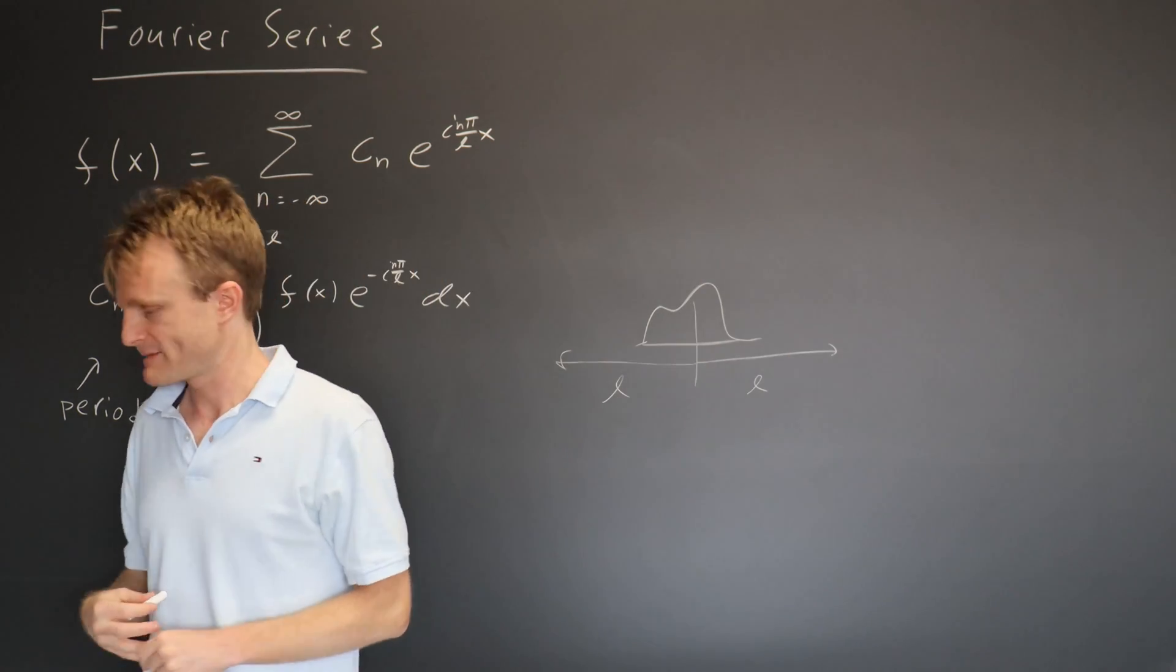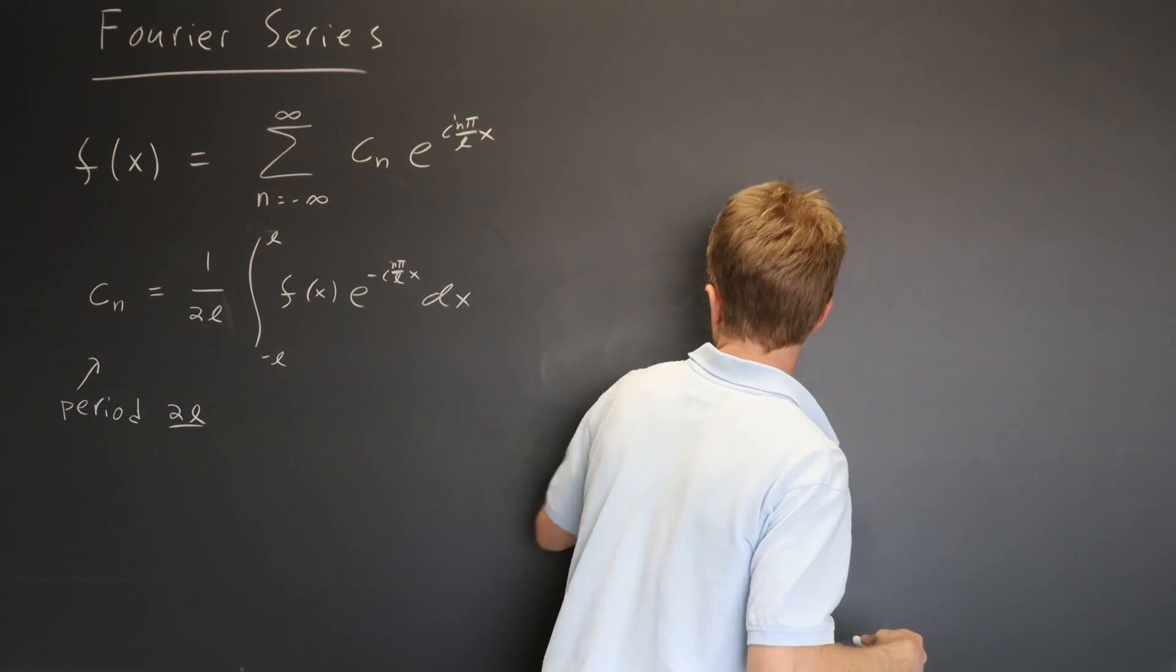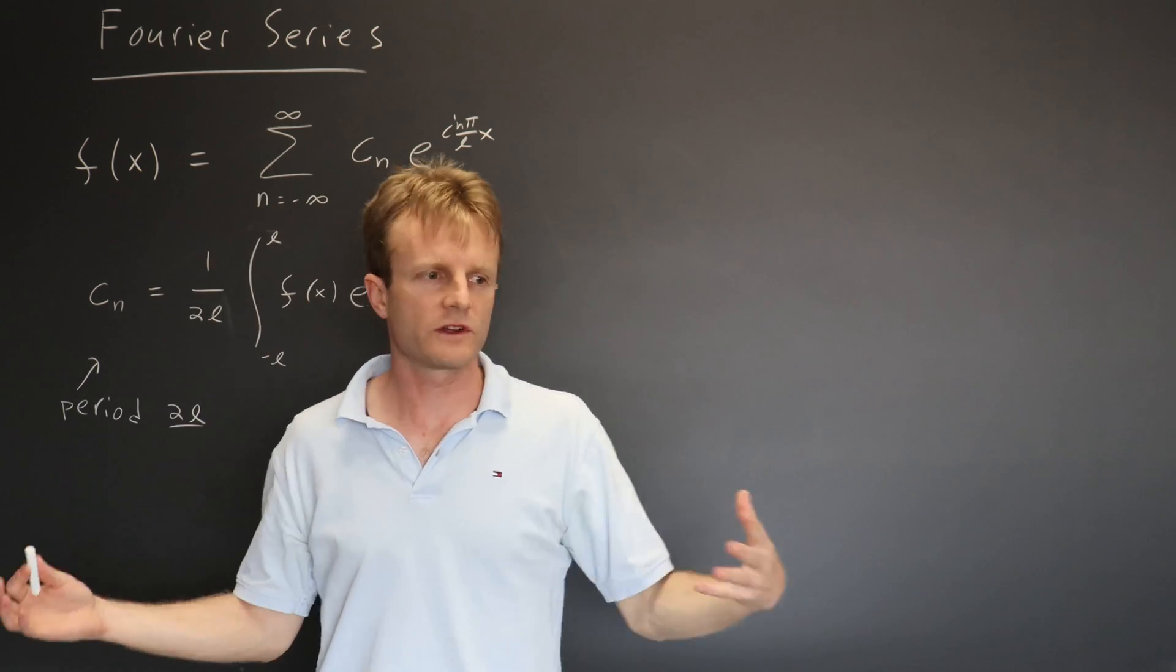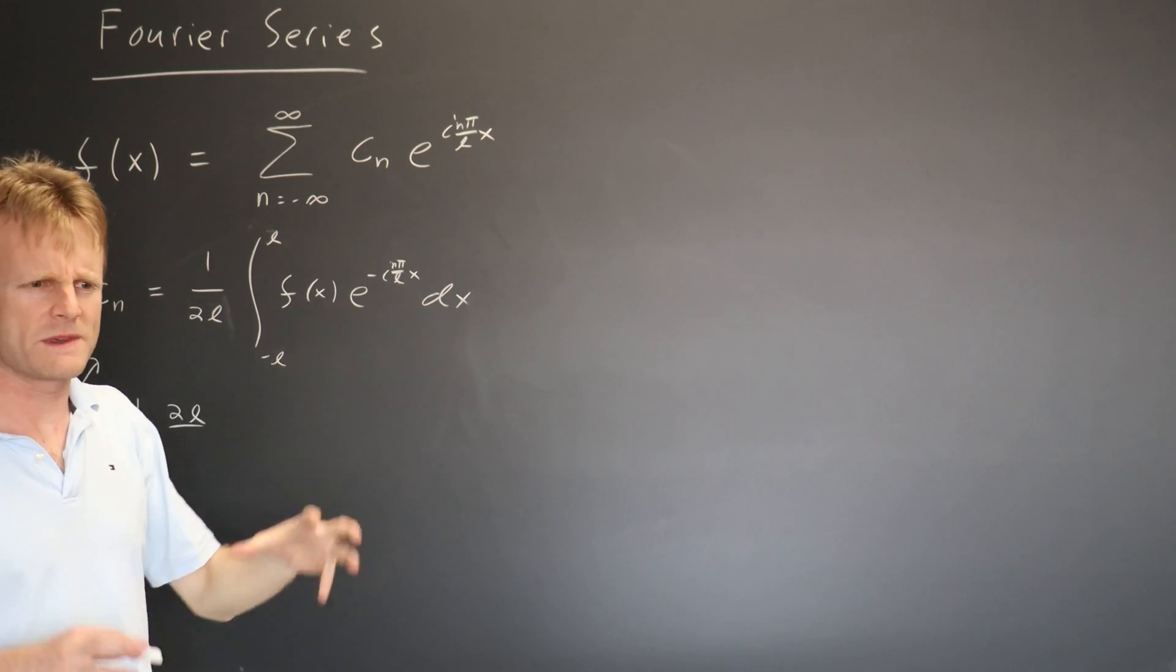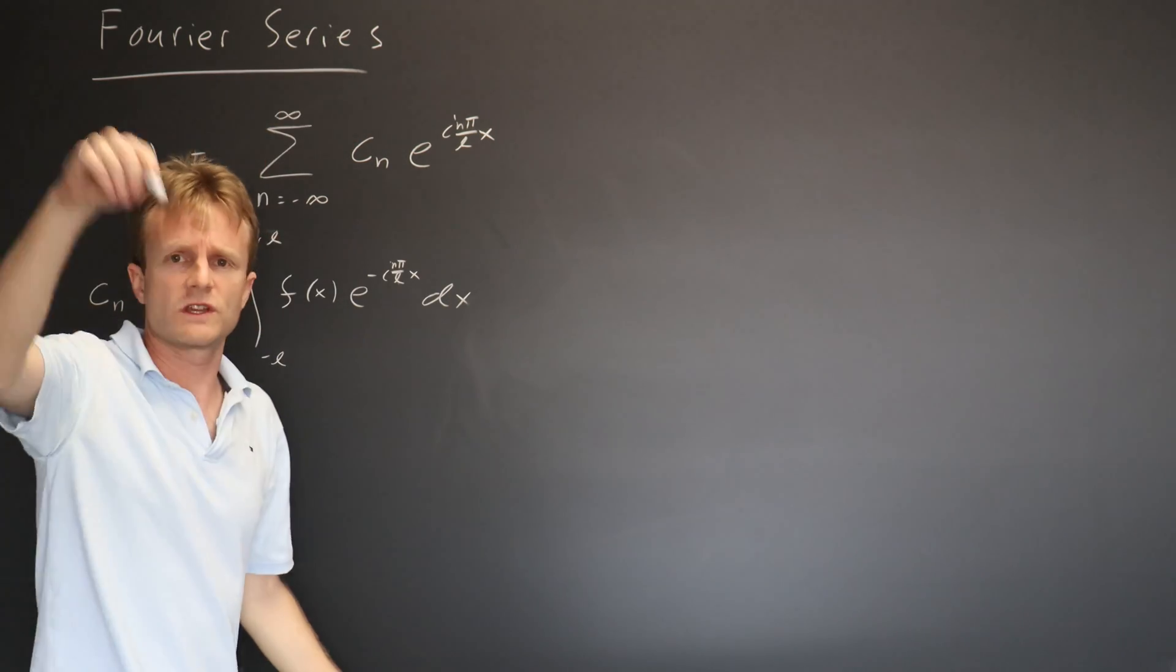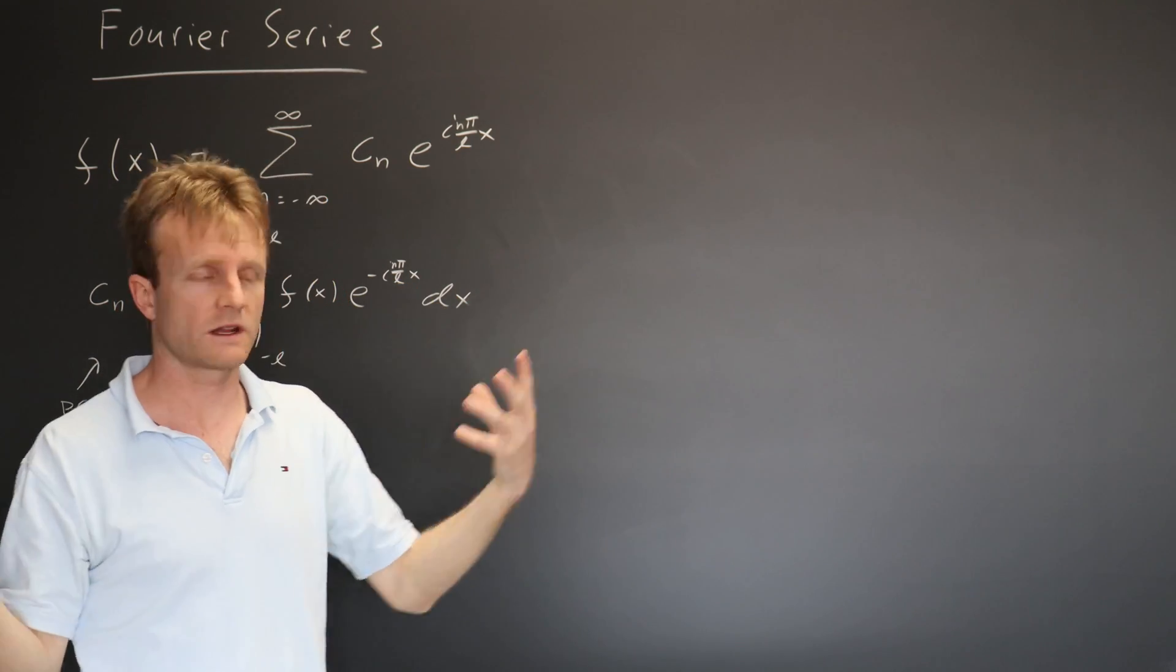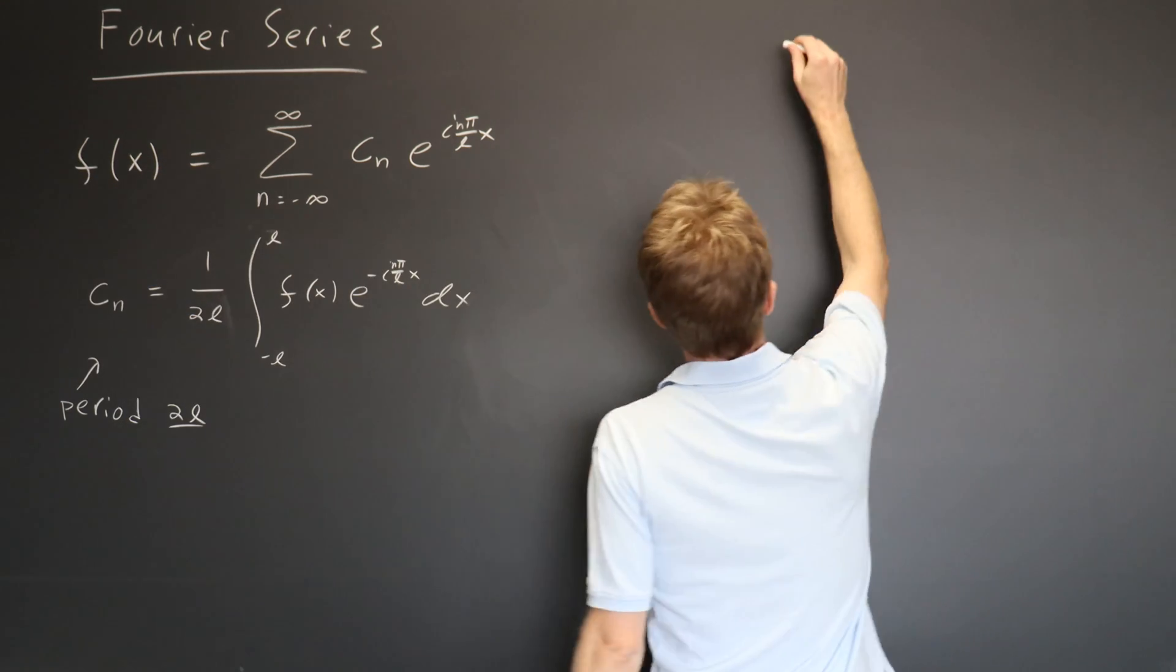But there are some subtleties, and I don't have time to explain the subtleties, but I can make them plausible. The main thing that happens is as the period of the function gets larger and larger, you start to need more and more c sub n's, because you're covering a larger and larger size region with sines and cosines of different frequencies. So you're going to need to fit in more frequencies as the region gets bigger to cover all that information. And in the limit that the region gets very large, all the way to infinity,